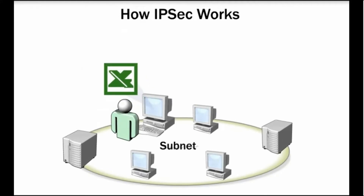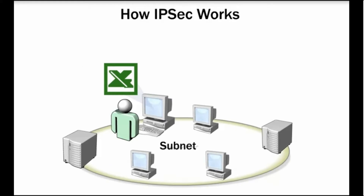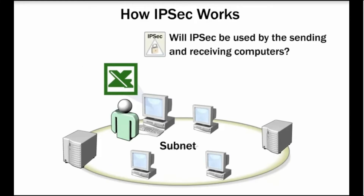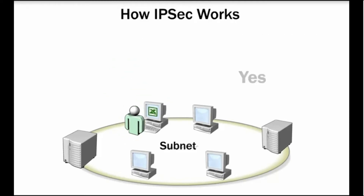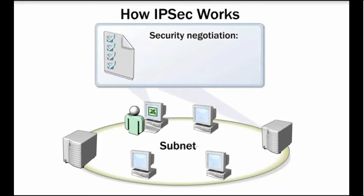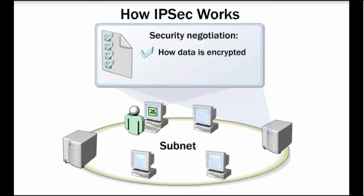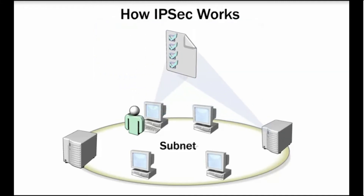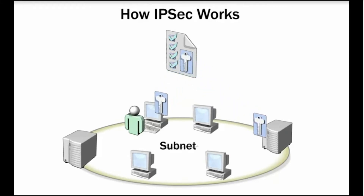When a user launches an application that requires the computer to transmit data to or from another computer, the sending computer identifies whether to use IPSec to encrypt this data. If IPSec will be used, a security negotiation must take place to determine how the data will be encrypted and decrypted by both the sending and receiving computers. IPSec uses the results of the security negotiation to create a session secret key that is required to encrypt and decrypt the data.